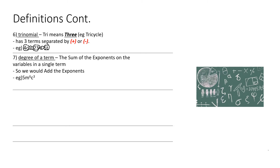Number 7, Degree of a term: the sum of the exponents on the variables in a single term. So we add the exponents. Example: 5m to the power of 6, c to the power of 3 — this is a single term, so we add the exponents 6 and 3, giving us a degree of 9.